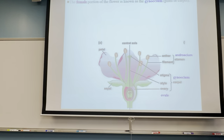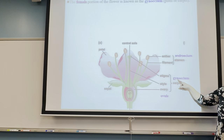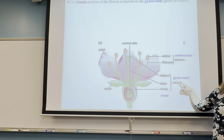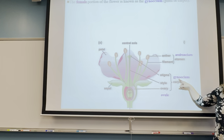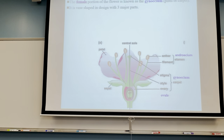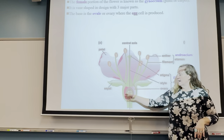The female portion in the middle is called the carpel, or gynoecium. The carpel has three parts to it. At the bottom is the ovule, or ovary.